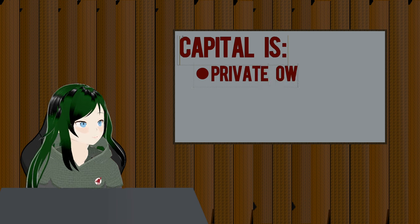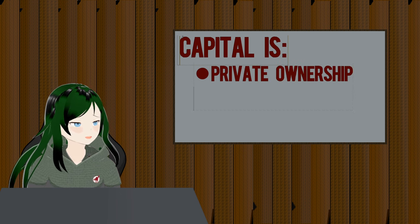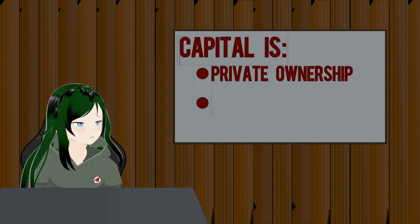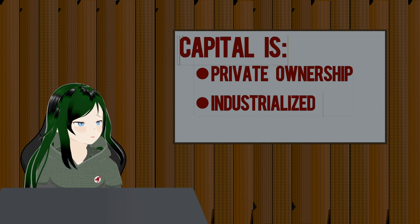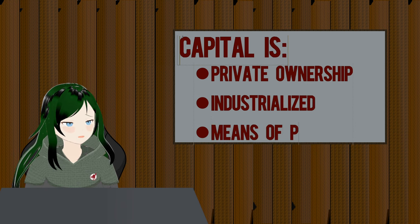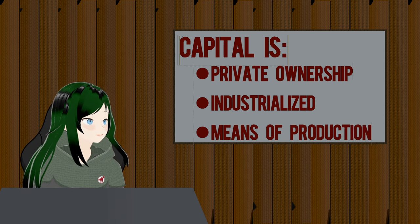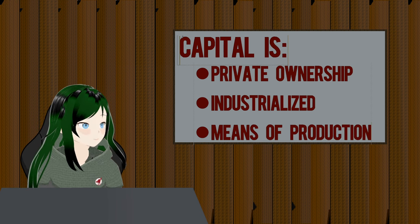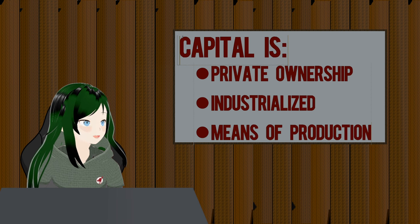Capitalism is a system based around the property relation and capital. It is commonly said that capital is synonymous with money or property, but it is much more complicated than that. It is based around private ownership over industrialized means of production. Each of these concepts will be a section in this video.